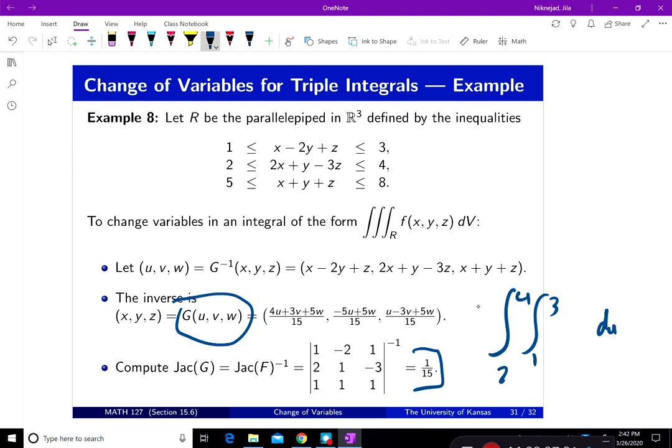For w, it's going to be 5 to 8. These are the bounds for the three. And then I have to plug in f of G of u, v, and w. And that, we have to solve for x, y, and z.